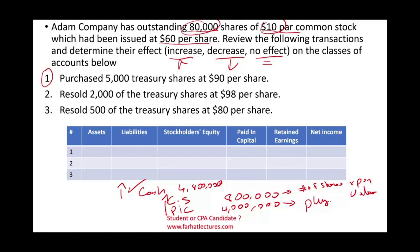Transaction one: we purchased 5,000 shares of treasury stock at $90. The journal entry credits cash for the amount paid — 5,000 times $90 equals $450,000 — and debits treasury stock for $450,000. Looking at the effect on accounts: assets will decrease because cash goes out.